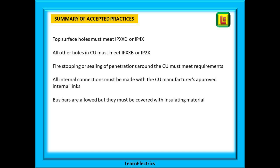Top surface holes in consumer units or cabinets must meet IPXXD or IP4X — in other words, maximum one millimetre holes. All other holes in consumer units must meet IPXXB or IP2X, which is a 12.5 millimetre gap. Fire stopping or sealing of penetrations around the consumer unit must meet building regulations requirements. All internal connections must be made with the consumer unit manufacturer's approved internal links; bus bars are also allowed but must be covered with insulating material. Ideally the consumer unit should be installed as close as possible to the service head to reduce cable length and the potential for mechanical damage.